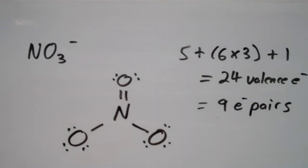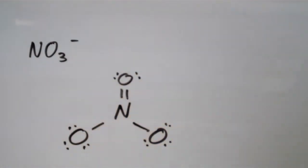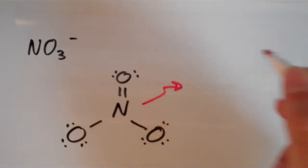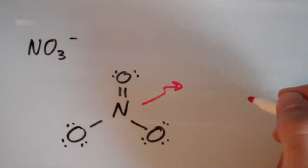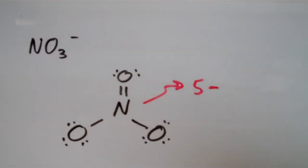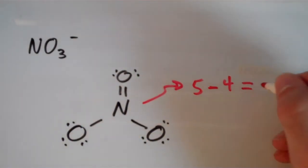Now let's calculate formal charges on the nitrate ion. Notice two oxygens are equivalent and one is not, plus there's nitrogen. Starting with the central nitrogen: it has five valence electrons. The formal electrons are one per shared pair — there are four shared pairs since the double bond counts as two — so five minus four equals positive one. The nitrogen has a formal charge of +1.